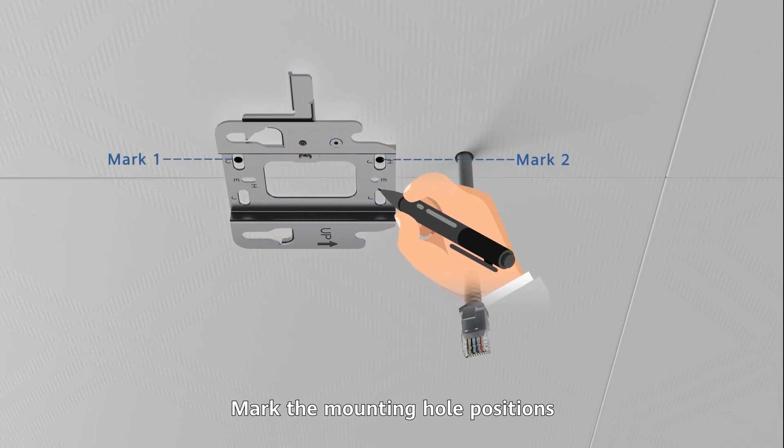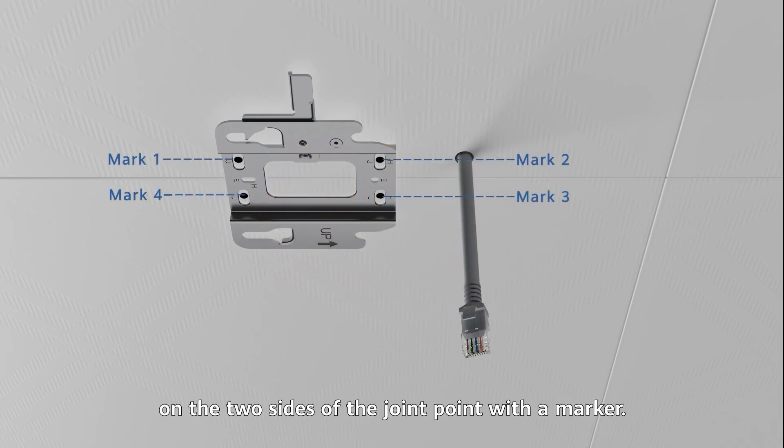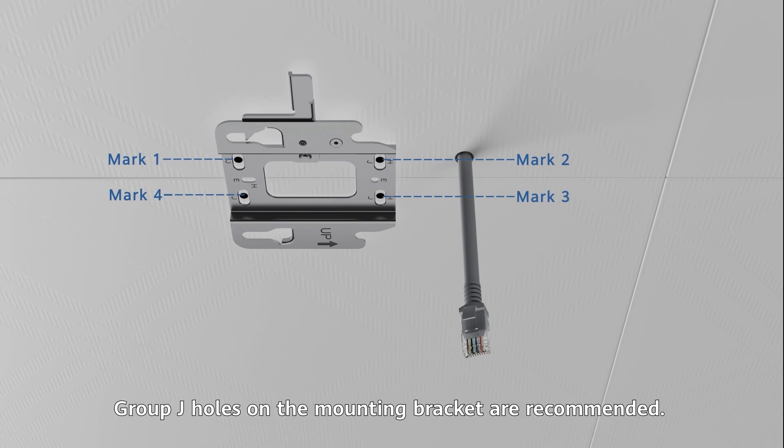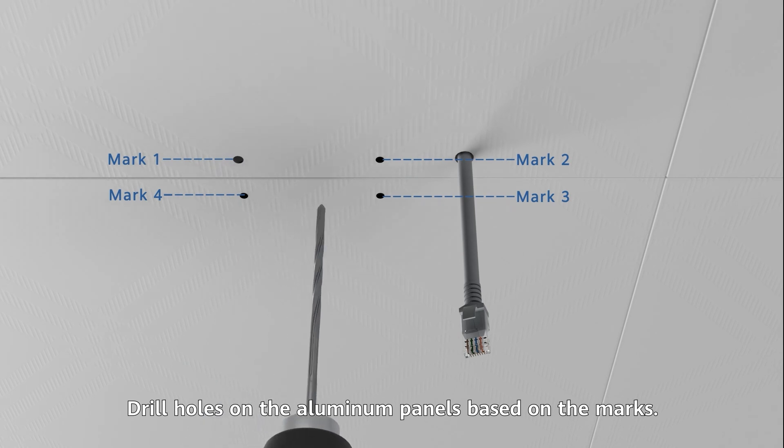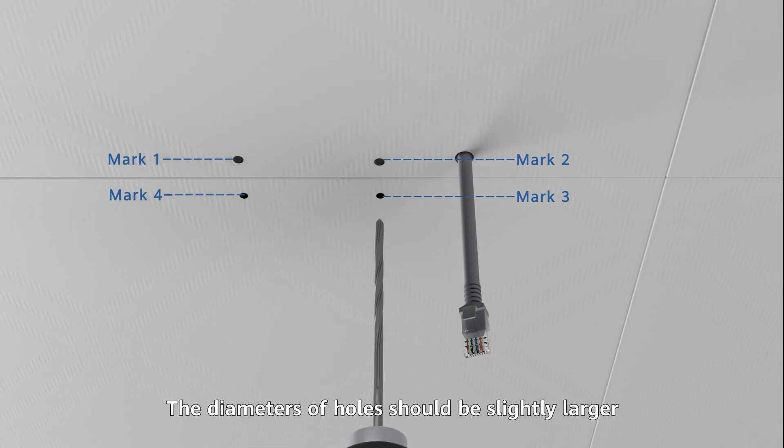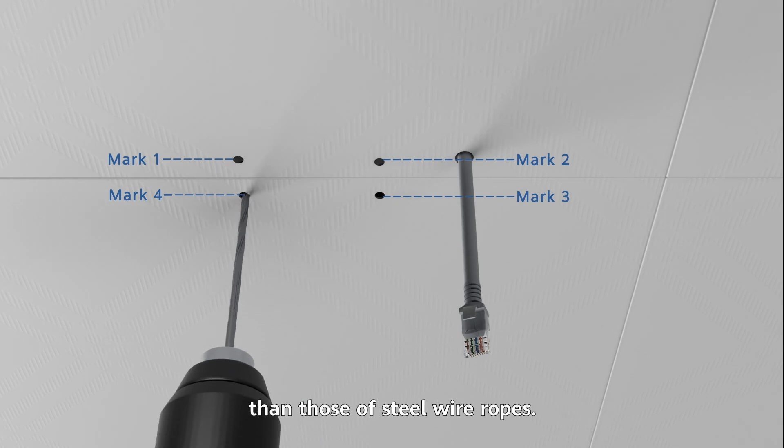Mark the mounting hole positions on the two sides of the joint point with a marker. Group J holes on the mounting bracket are recommended. Drill holes on the aluminum panels based on the marks. The diameters of holes should be slightly larger than those of steel wire ropes.